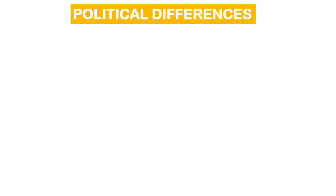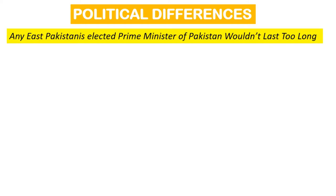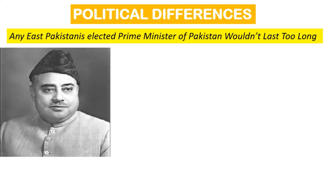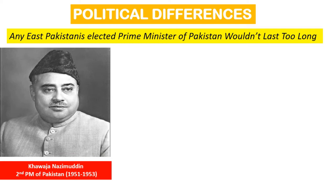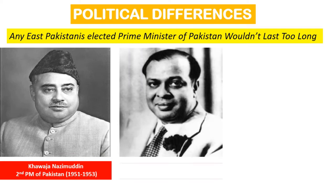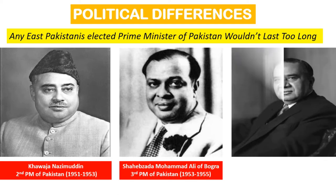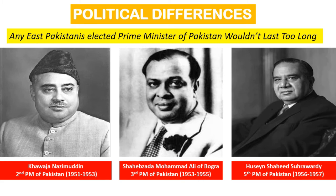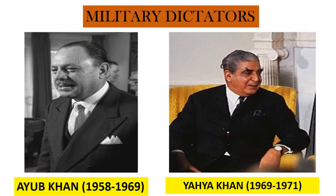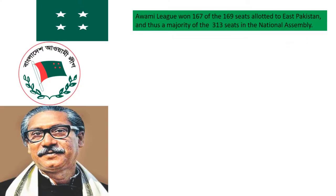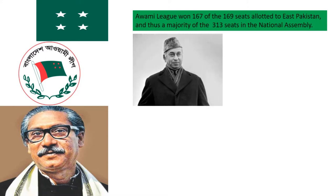Now come political differences. Although East Pakistan had a slight majority of the country's population, political power remained in the hands of West Pakistanis. Bengalis observed that the West Pakistani establishment would swiftly remove any East Pakistani elected prime ministers, such as Khwaja Nazimuddin, Muhammad Ali Bogra, or Hussain Shahid Suhrawardy. With the military dictatorship of Ayub Khan and Yahya Khan — both West Pakistanis — tensions reached their peak when the Awami League, the largest East Pakistani political party led by Sheikh Mujibur Rahman, won a landslide victory in the national elections. The party won 167 of the 169 seats allotted to East Pakistanis and thus a majority of the 313 seats in the national assembly, giving the Awami League the constitutional right to form a government.